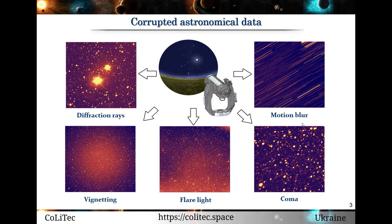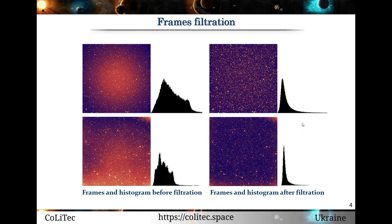Also, there are a lot of different types of telescope operations that can cause corrupted astronomical data. For example, diffraction rays, motion blur, vignetting, flare light, coma, and others. Data with such aberrations is unnecessary information. Almost all aberrations can be removed by different filters during the preprocessing stage. But what can we do with the blurring?